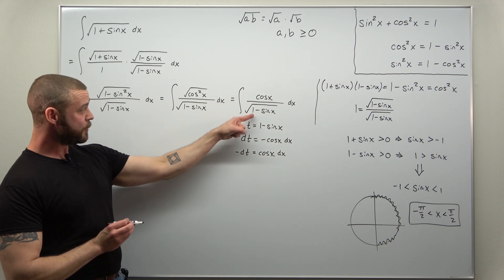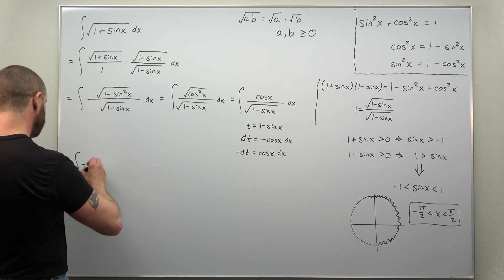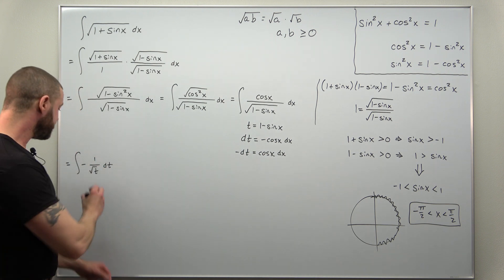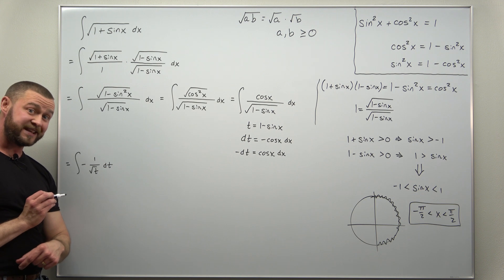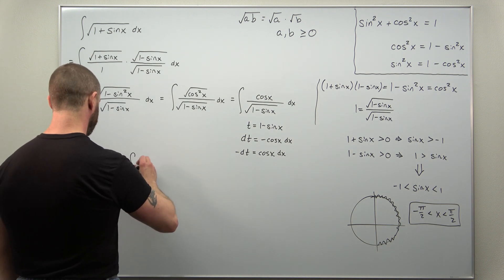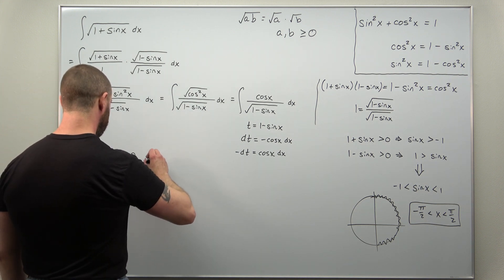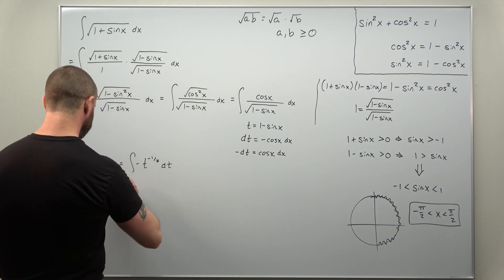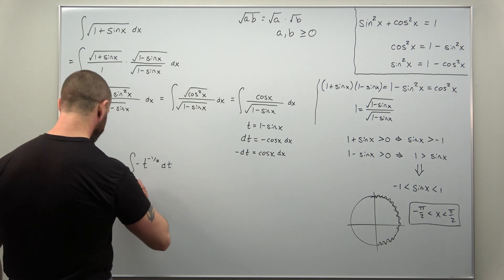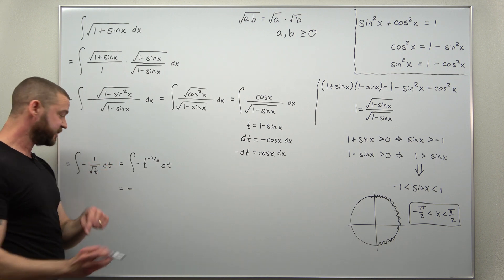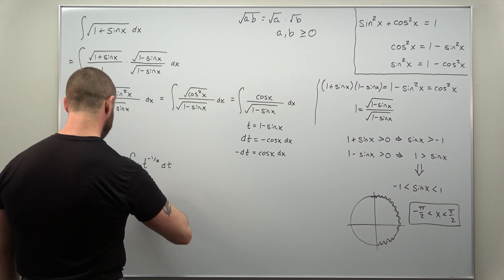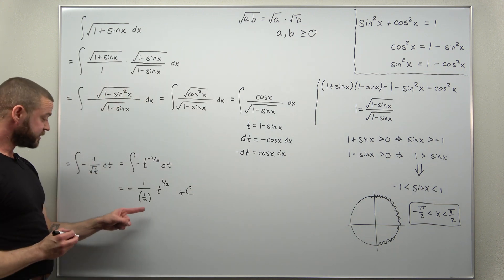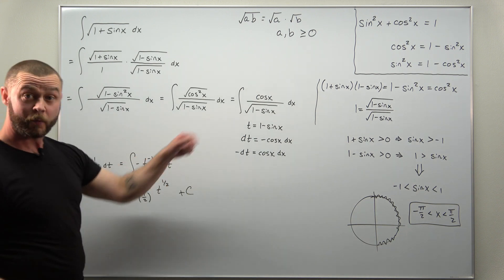We get negative one over the square root of t dt. We can rewrite one over the square root of t as t to the negative one half, so we have negative t to the negative one half. That's simple to integrate using the basic power rule: add one to the power to get positive one half, then divide by that new power of one half. Dividing by a fraction flips it, so we multiply by two.